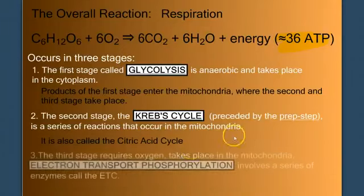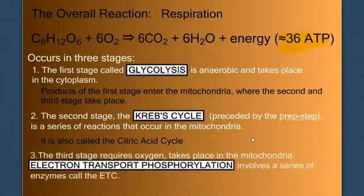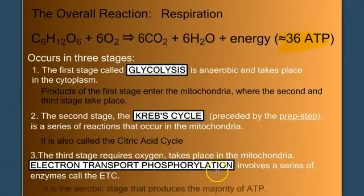And the final stage of respiration is electron transport phosphorylation. It takes place deep inside the mitochondria. It's a series of enzymes embedded in the inner membrane called the electron transport chain. It's this stage of respiration that's aerobic and that will produce the majority of our ATP.